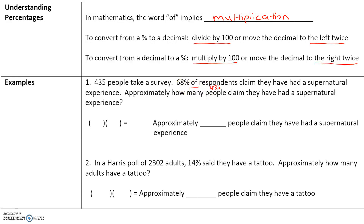So if we want to find out what is 68% of 435, we would take 435 and multiply it by 68%. However, we first have to convert 68% into a decimal. We can do this by dividing by 100 or by moving the decimal point two spaces to the left. So 68% becomes 0.68. Multiplying 435 times 0.68 gives us 295.8. We can't have 0.8 of a person, so we round up — approximately 296 people claim they have had a supernatural experience.